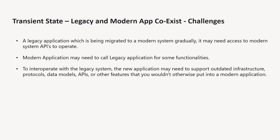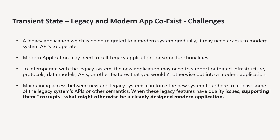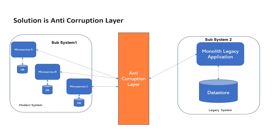The third issue is that both need to interoperate, and the legacy app and new app need to talk to each other using legacy or obsolete protocols and APIs. If you make changes for this in your modern application, it will corrupt your modern application. If you directly support the legacy application from your modern application, obsolete libraries, patterns, and APIs become part of your modern application. So how do we ensure we are not corrupting our new application? The solution is the anti-corruption layer.